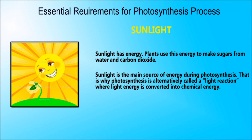Sunlight has energy. Plants use this energy to make sugars from water and carbon dioxide. Sunlight is the main source of energy during photosynthesis. That is why photosynthesis is alternatively called a light reaction, where light energy is converted into chemical energy.